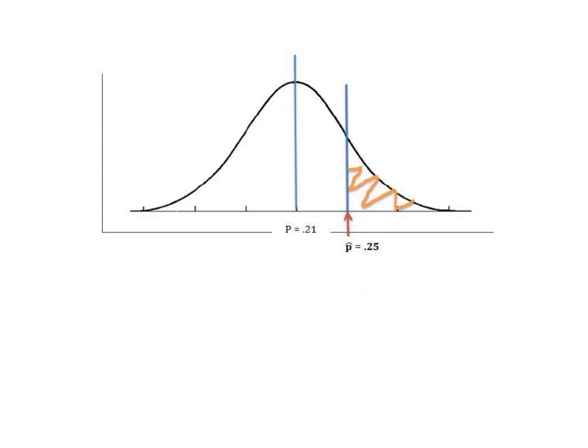So what I've done is I've just sketched out what the problem looks like. So we knew the population proportion was 0.21, and we're trying to find the probability that our sample proportion will be 25% or greater. And so the area that I'm looking for is this small area in the tail of the curve.